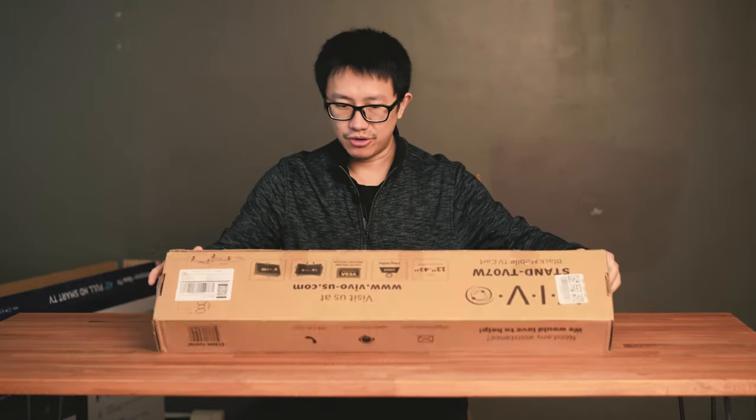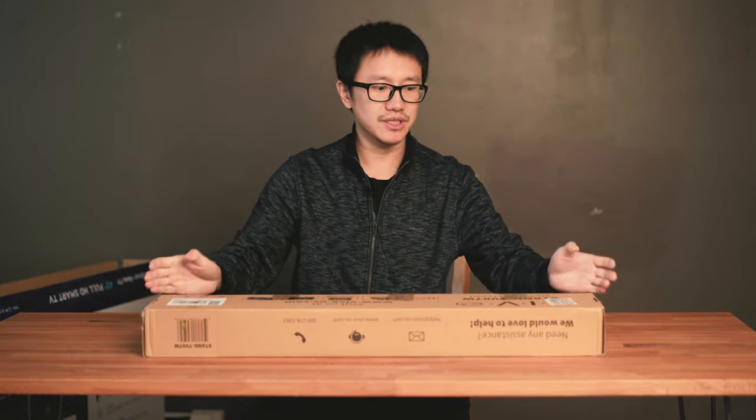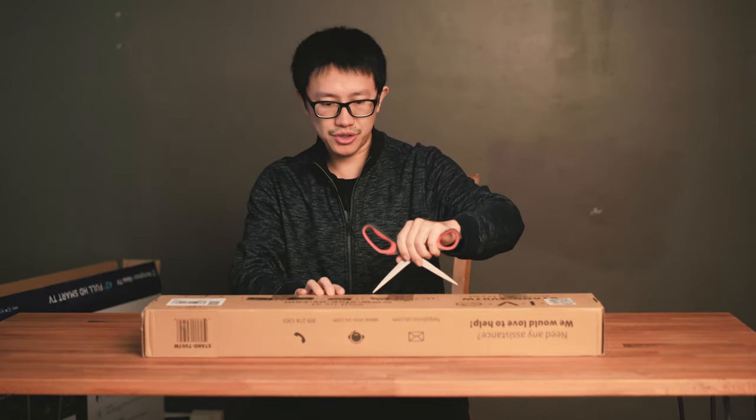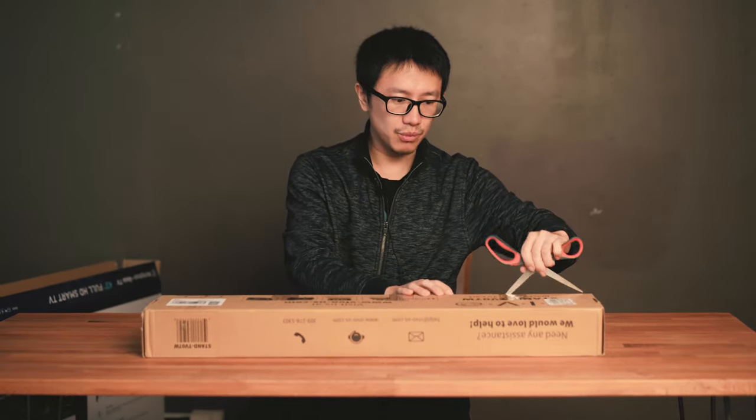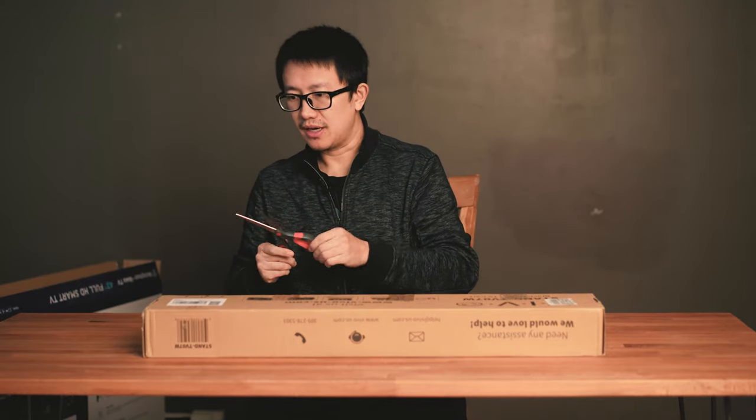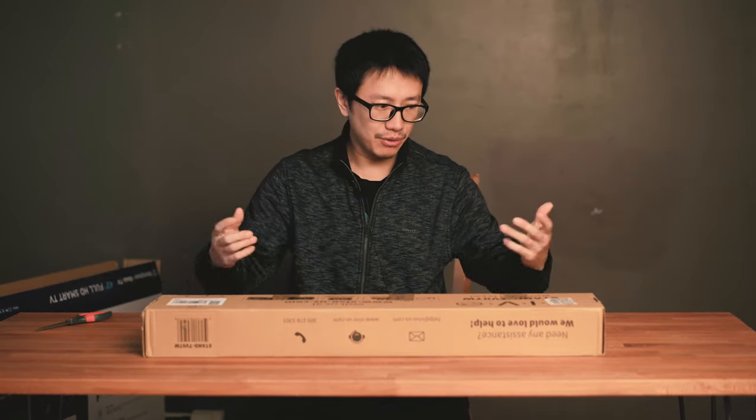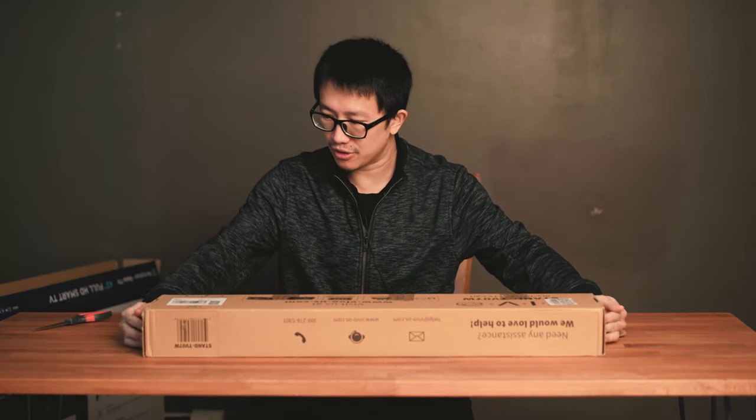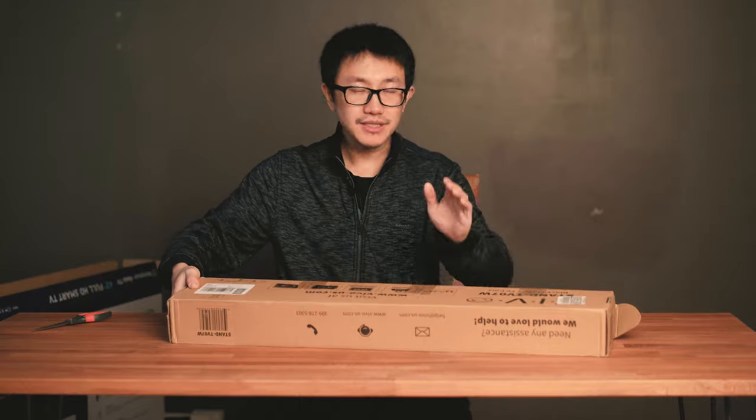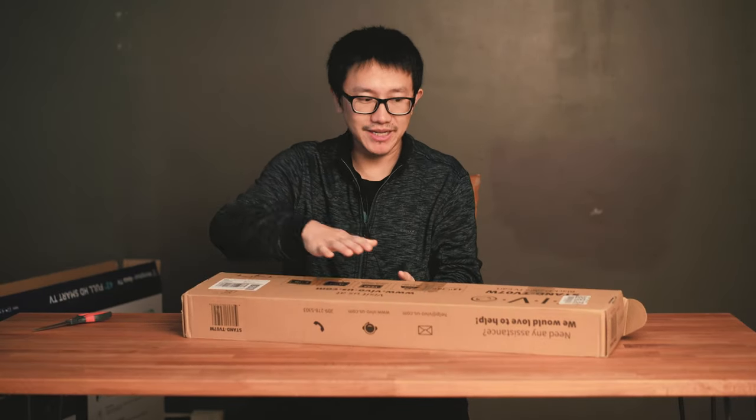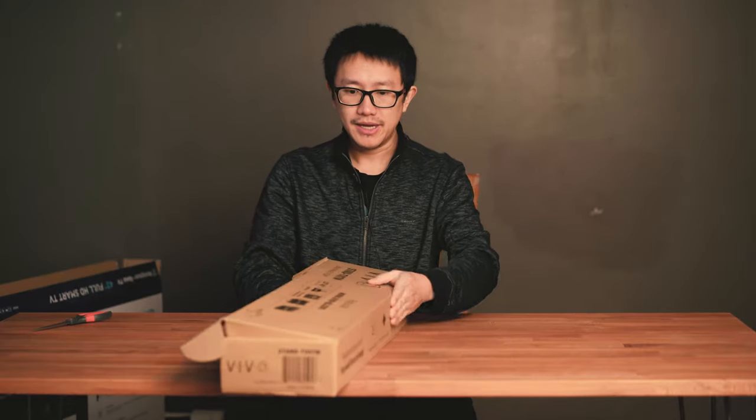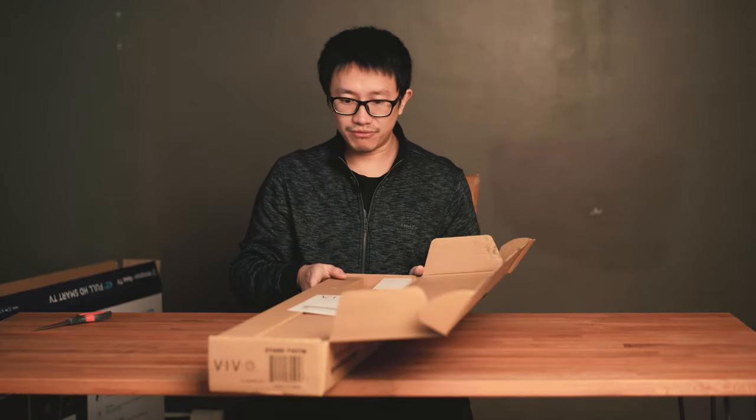This is their Vivo standard mobile TV cart. They make two versions, one with a rolling wheel and one without. The price difference is about five dollars. I bought the one with the rolling wheel so I can move it around easier. This is my second stand already. I bought another one for our Miami home and I'm just getting another one for the New Jersey home.